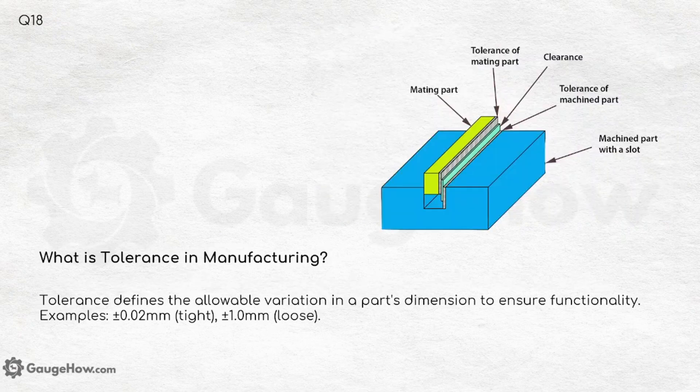What is tolerance in manufacturing? Tolerance defines the allowable variation in a part's dimension to ensure functionality. The figure shows the mating part and clearance along with the tolerance of the mating part, giving a better idea of how tolerance exactly works in manufacturing.